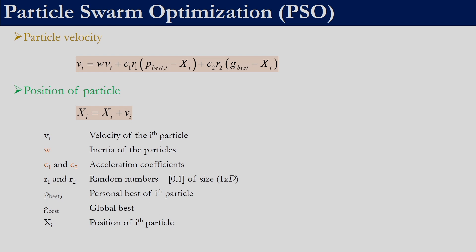In particle swarm optimization we had to update the velocity of the particle first, then determine the position. For determining the velocity in the (t+1)-th generation we will use the velocity of the t-th generation. w, c1, and c2 are user-defined parameters; r1 denotes random numbers between 0 and 1 and it has to be of dimension 1×d, so for every decision variable we generate one random number — same with r2, also 1×d. x_i is the particle position; p_best is the best solution obtained for the i-th particle so far.